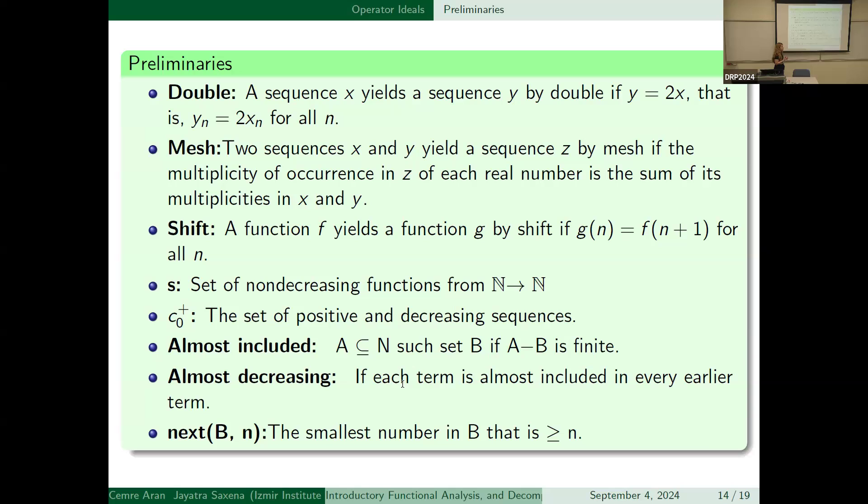And x is obtained by y-shifting if g_n is equal to f_{n+1}. And S is the set of non-decreasing functions from N to N. c_0^+ is the set of all positive and decreasing sequences. Almost included means a subset of N, and such that if A minus B is finite, it's almost included. And almost decreasing if each term is almost included in every earlier term, it means it's almost decreasing. And the function next_B(n) is the smallest number in B that is greater than or equal to n.